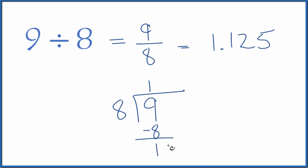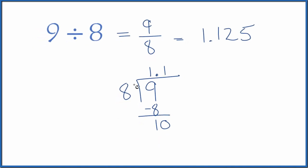8 doesn't go into 1, but we could call this 10 if we put a decimal point. So 1 times 8 is 8. We subtract and get 2, call it 20, move over 1.